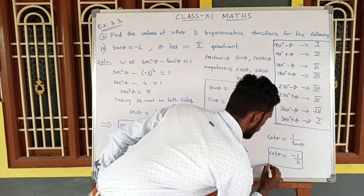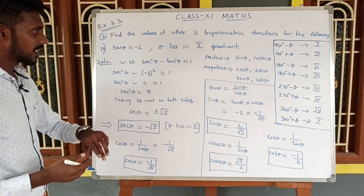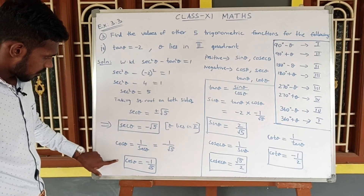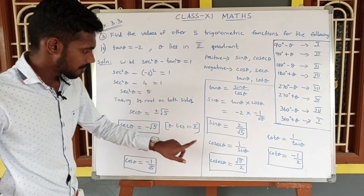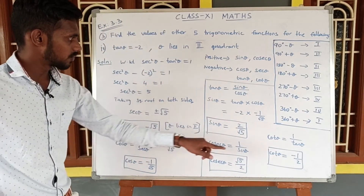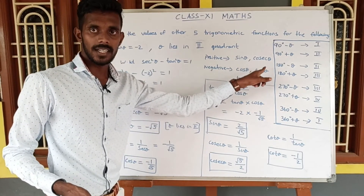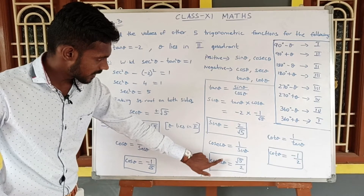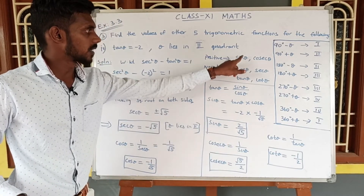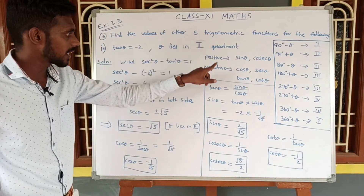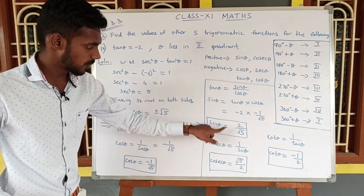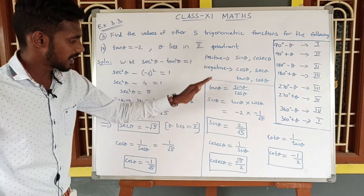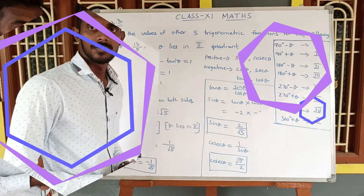So we can justify all the signs. Tan θ, cos θ, sec θ, and cot θ are negative — correct for the second quadrant. Sin θ and cosecant θ are positive, because in the second quadrant only sin and cosecant are positive. All values are satisfied.